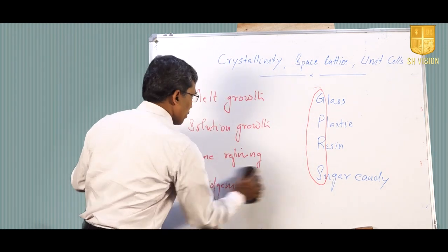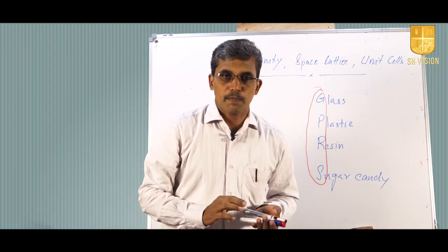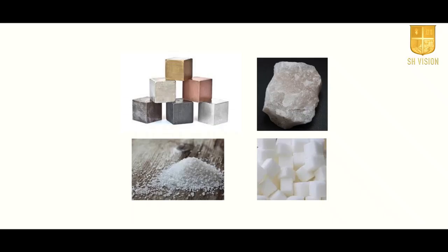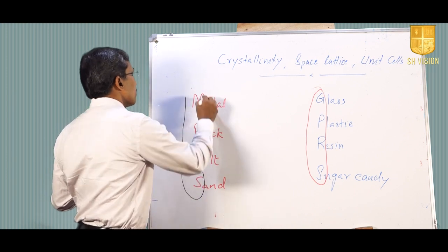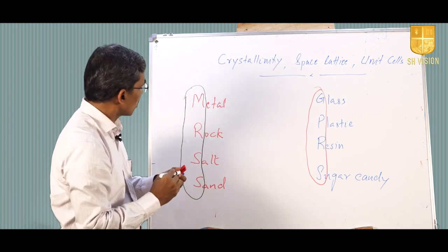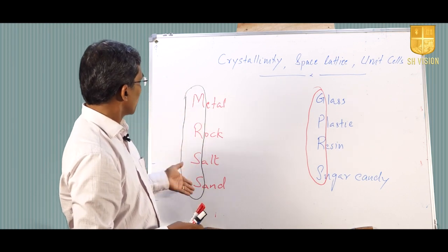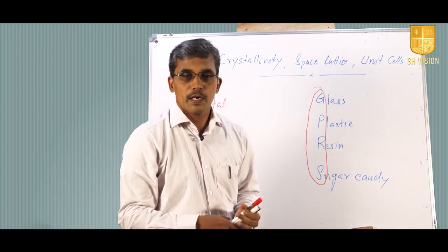In the case of a polycrystalline system, many of the materials we see in nature are polycrystalline. Examples are metals, rock, salt, sand — you can remember these as MRS (like Material Research Society). Metals, rock, salt, sand, etc. are all examples of a polycrystalline system.